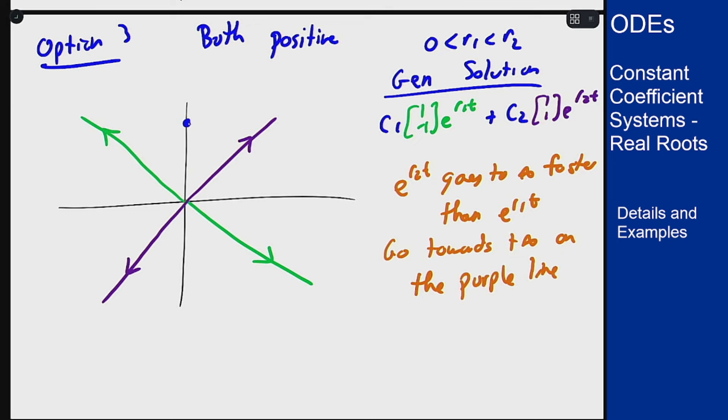That will give us something like this sort of path going off this way and then going towards minus infinity we're going to see the same idea that we had from the nodal sink. The fact that r2 is bigger means it's going to go away faster as t goes to minus infinity so we're going to approach zero along the green line.